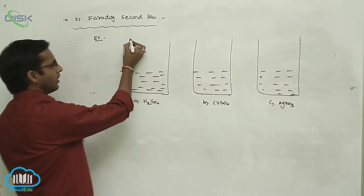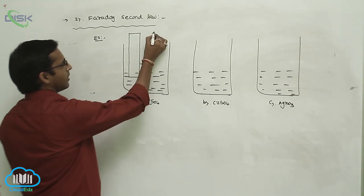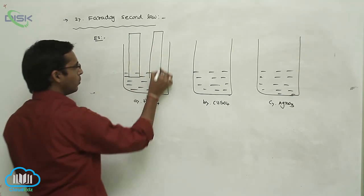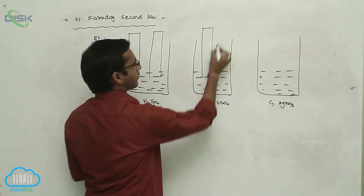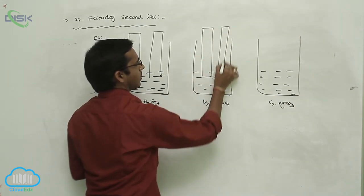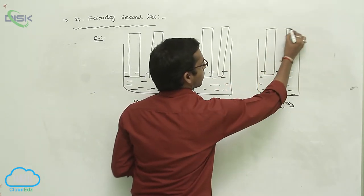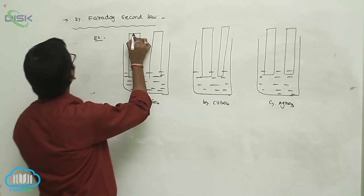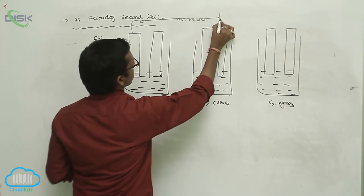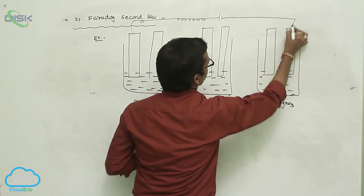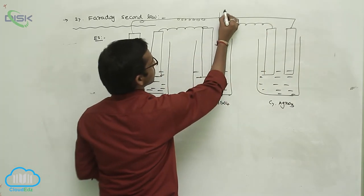In each aqueous solution is containing two electrodes. So one is cation, another one is anion. So these all are connected to a battery. So this is your battery.